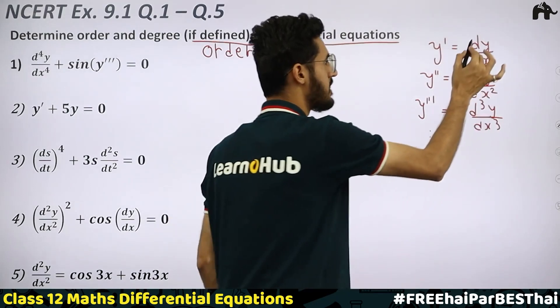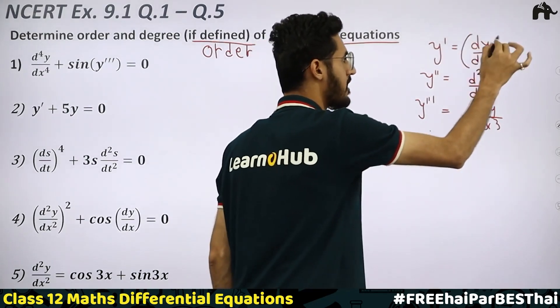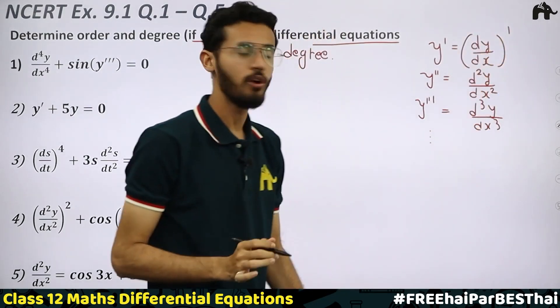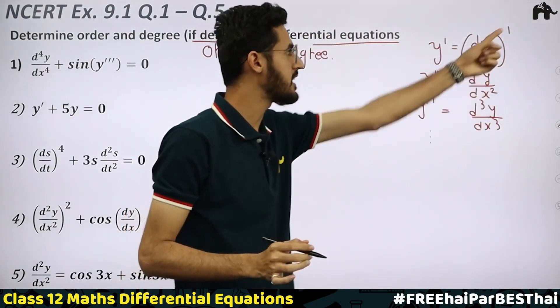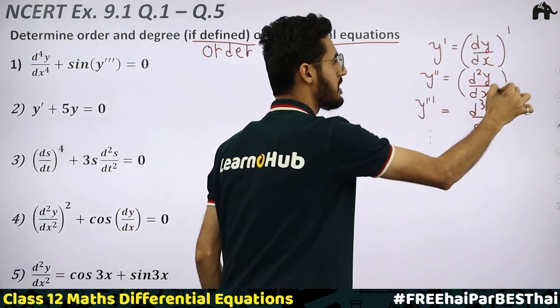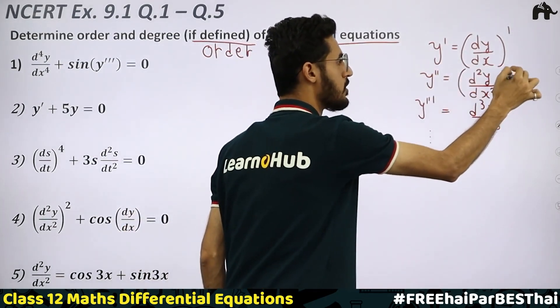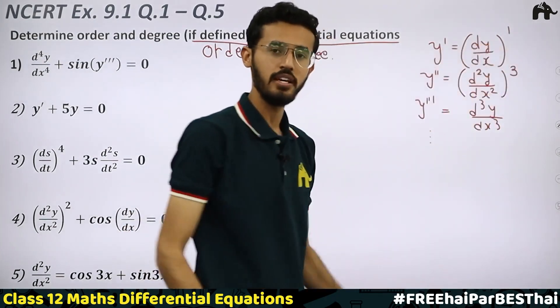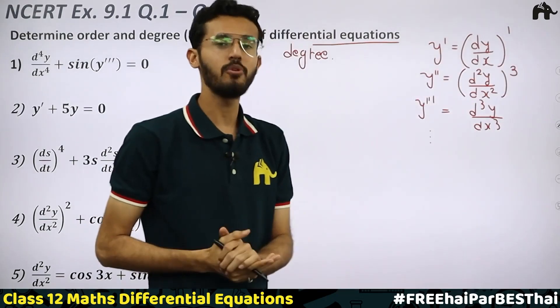If the power is 1, that is first order. If the power is 1 again, that is third order. If the power is 3, then the degree is 3.